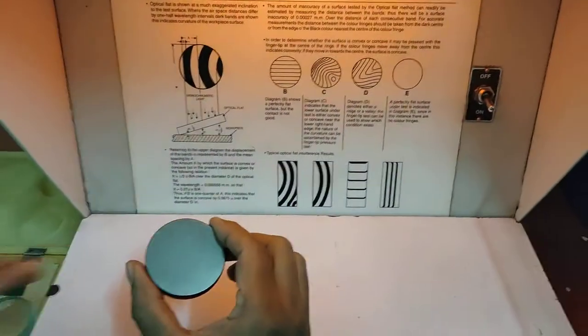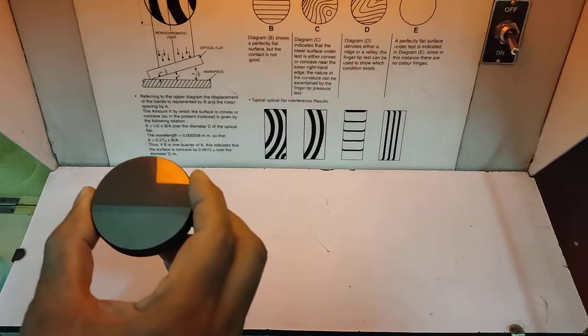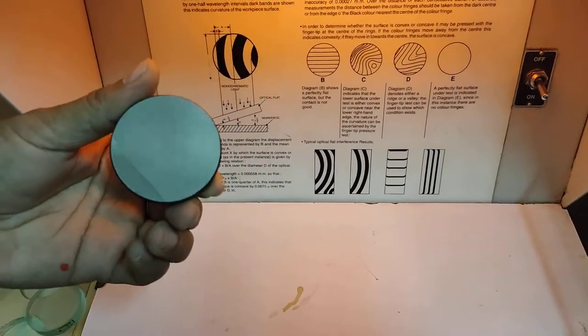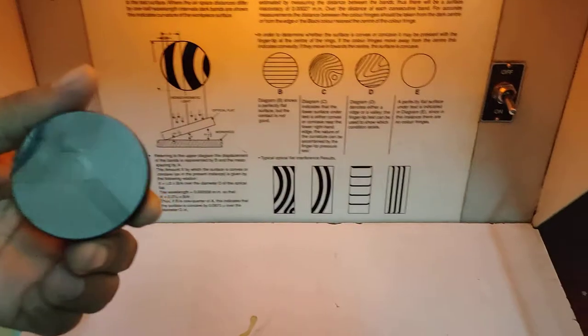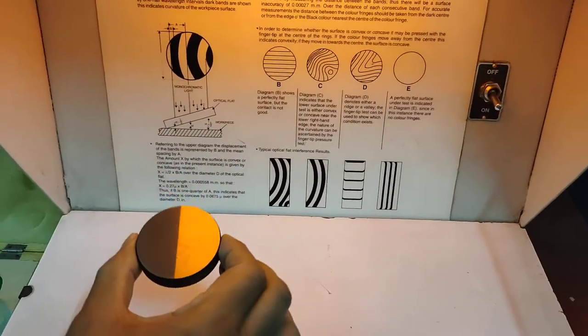This is the masterpiece we are going to use for performing the practical or checking the flatness. This is a highly surface-finished optical flat object which is going to be used for measurement of flatness.